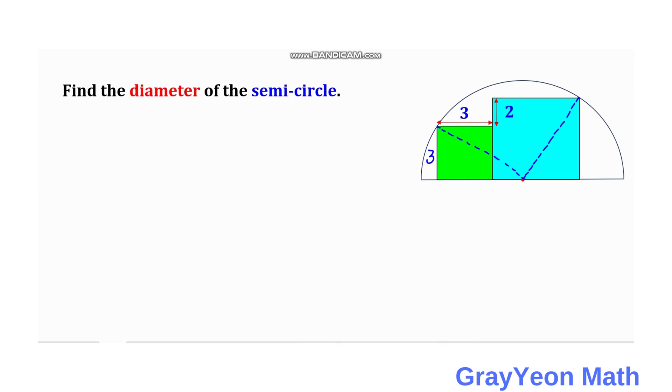First we need to get the side of this blue square. The side of the blue square is simply 3 plus 2, and that is 5 because this is 3. So the total is 5.